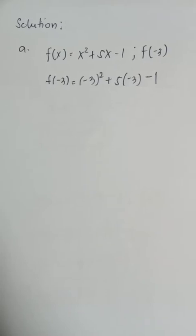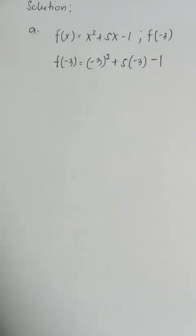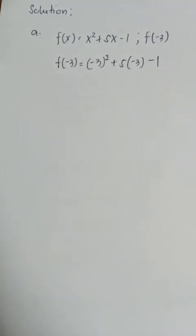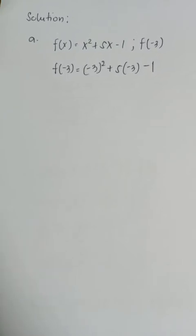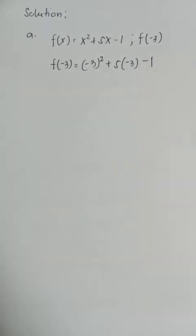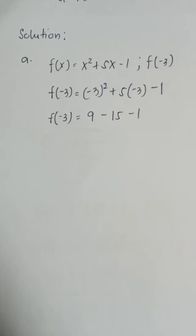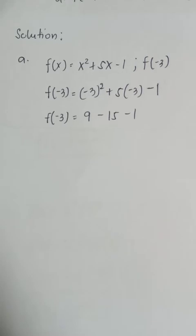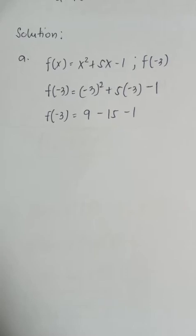So we have now f of negative 3 is equal to negative 3 squared plus 5 times negative 3 minus 1. After substituting, let's try to simplify. f of negative 3 is equal to negative 3 squared, which we can compute as negative 3 times negative 3, giving us 9.